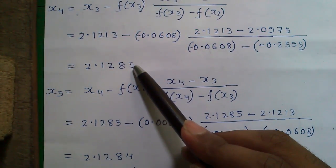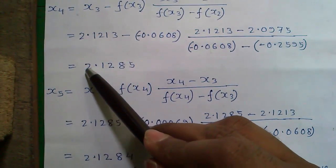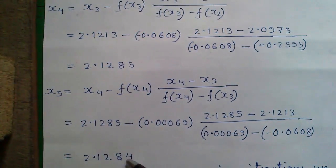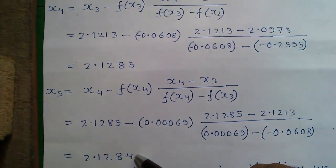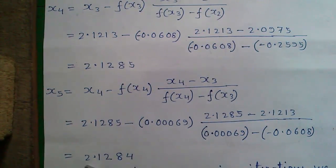As you can see for this question in x₄ we get 2.1285 and in x₅ we get 2.1284 that is almost equal to value. So we can stop our calculation. And this is our required root.